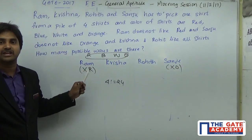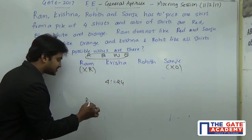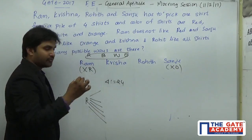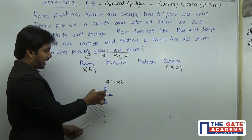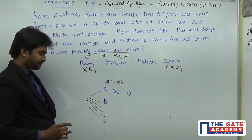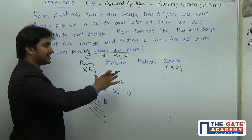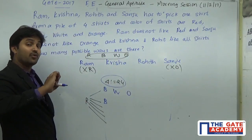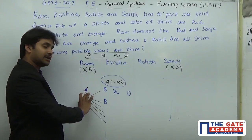Out of these 24 possibilities, we have to remove the cases where Ram takes the red shirt or Sanju takes the orange shirt. If Ram takes the red shirt, there are six total cases available for the remaining people. I am writing out those cases so that we can remove them and arrive at the answer where everyone has a liked shirt. All cases equal 24, and we remove those where the disliked conditions occur.